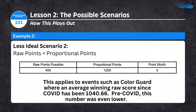This applies to events like color guard. Looking at average winning scores at national-level events since COVID, the average winning color guard score was about 1,040 — less than the 1,200 proportional points assigned in the SOP. Pre-COVID that number was sometimes as low as 800. So in color guard, one judge-awarded point is generally worth more than one point toward the overall championship.